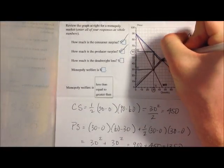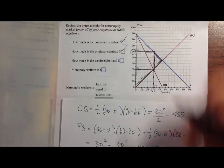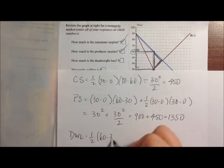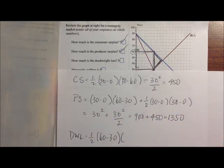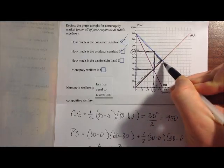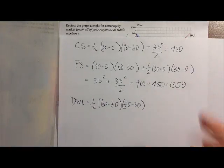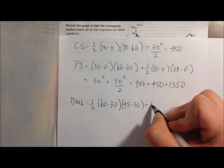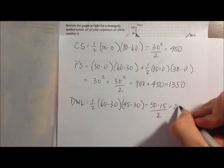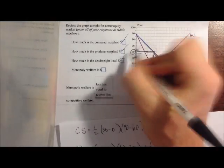So this triangle over here represents our deadweight loss. And the area of that is 1/2 times our base here, which is 60 minus 30, times the height of that triangle. The height is here. It goes from 30 to 45. So 45 minus 30. And so our deadweight loss is 30 times 15 over 2, which is 225. So that's our deadweight loss.